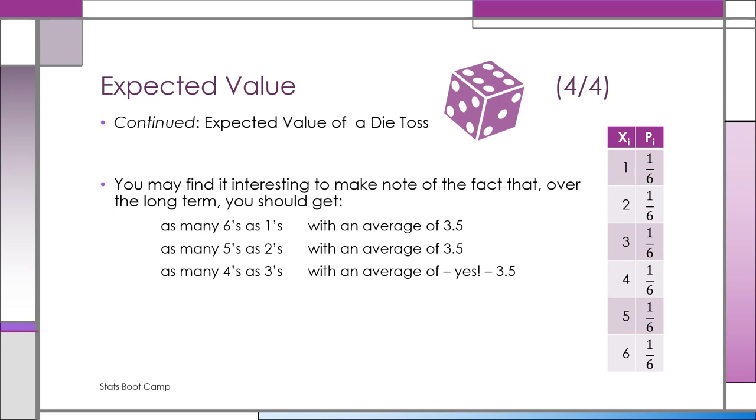As many 2s as 5s, so that averages out to 3.5. And that's logically why the expected value, when you toss a die even once, you're going to say expected value is 3.5.